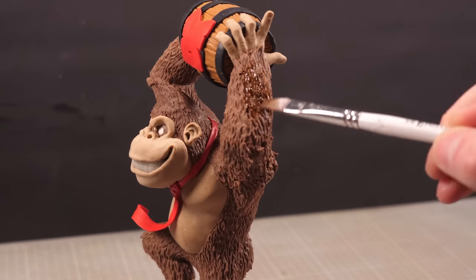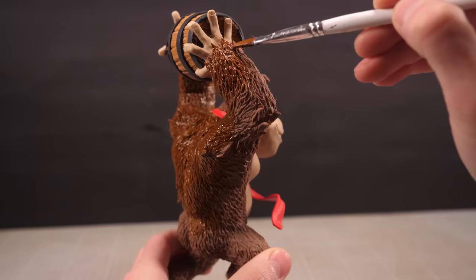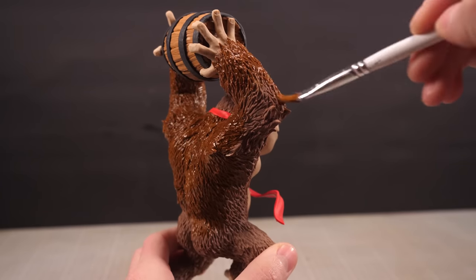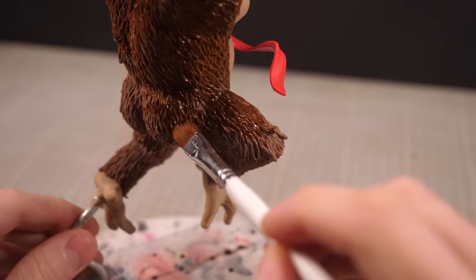Kong's got a pretty flat brown coat, so to give that coat some luster, I'll repaint the brown with a thick brown wash, which should settle in all the fur detail and really make it pop.